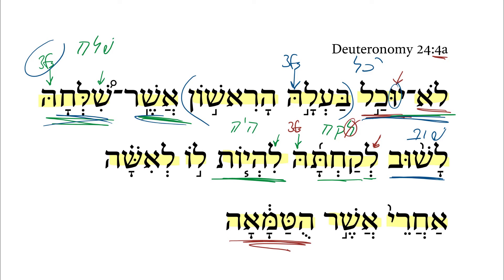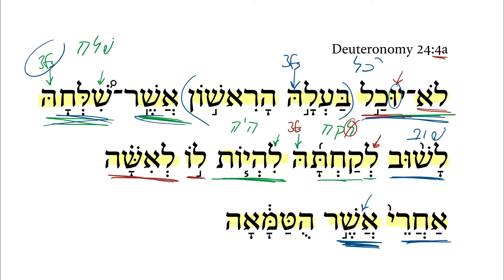So this is a convoluted way to basically say that the first husband cannot remarry her. And then we get to this part: after which, or after that. This is kind of a nominalizing asher — the way, I believe, Homestead puts it — after which, being the condition or the situation.